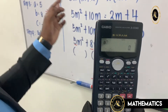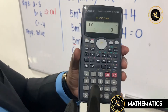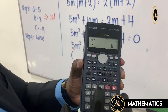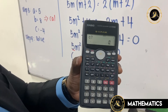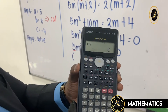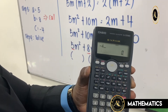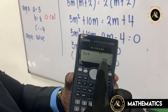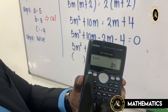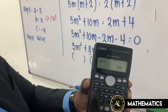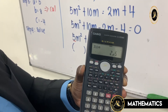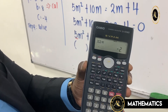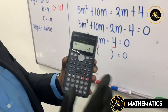The calculator asks for a value — enter 5, press equal. b value — enter 8, press equal. c value — enter negative 4, press equal. You will get a decimal, but don't take the decimal — press Shift a-b/c to get a fraction. You get 2 over 5, and the other answer is negative 2.